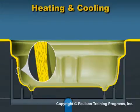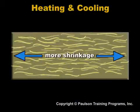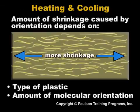Oriented molecules are under stress. Over time, this stress causes additional shrinkage as the molecules slowly relax. This is why there can be additional shrinkage and warp long after the molding. The shrinkage of thermoformed parts is always greater in the direction of the molecular orientation. The amount of shrinkage caused by orientation depends on the type of plastic and the amount of molecular orientation in the parts.